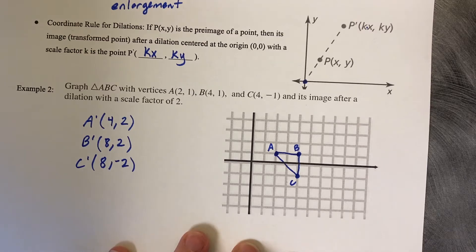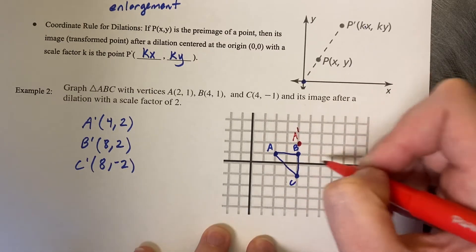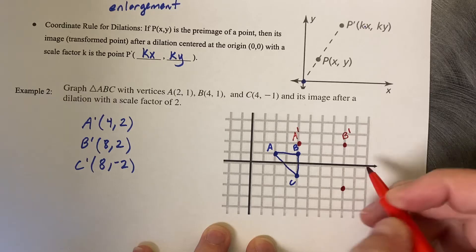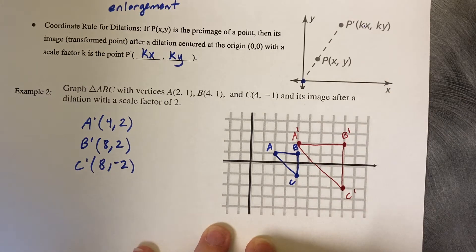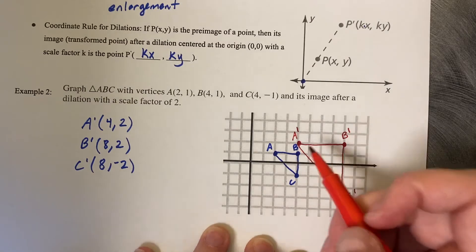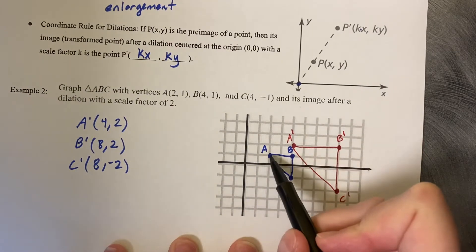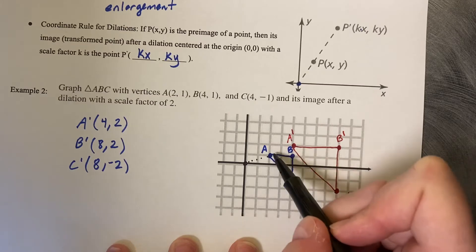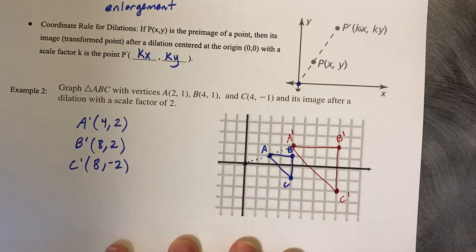Plot the image: A prime at (4, 2), B prime at (8, 2), and C prime at (8, -2). We made an enlargement of triangle ABC. You can verify the scale factor of 2 by looking at the slope lengths — from the origin, you go up 1 over 2 to reach A, then up 1 over 2 again to reach A prime, confirming that the distance doubles from the center.